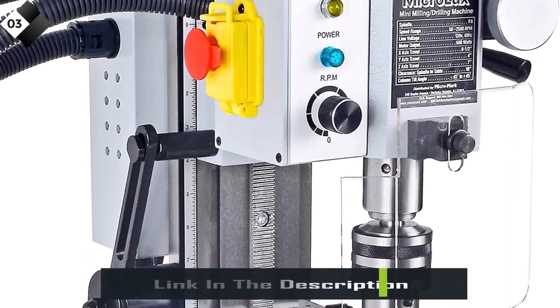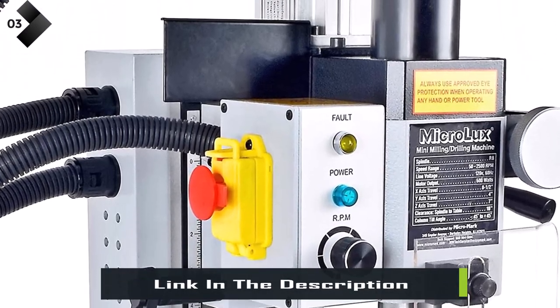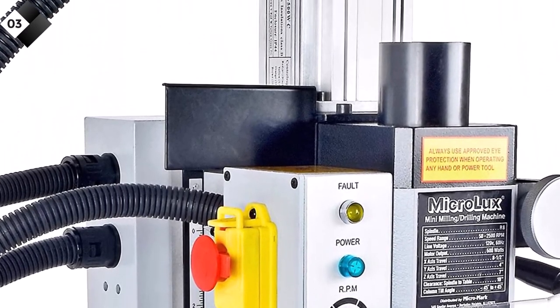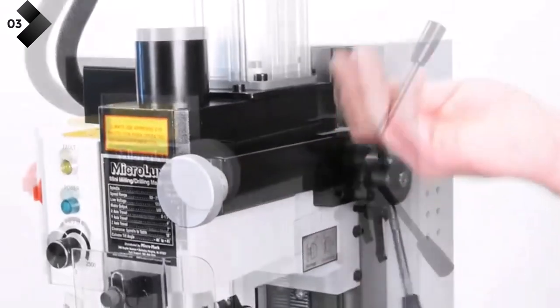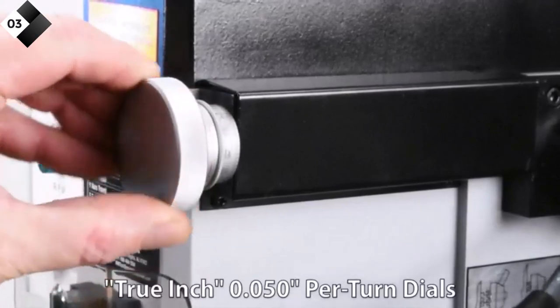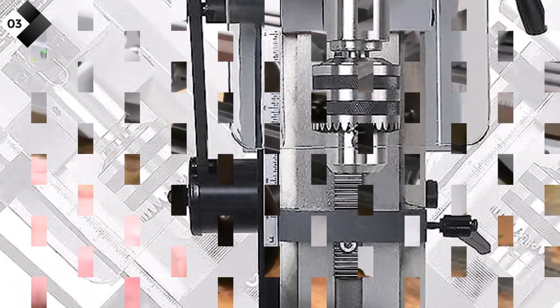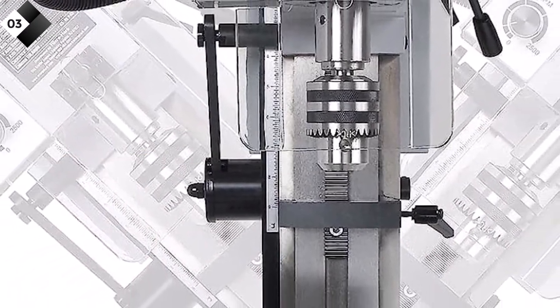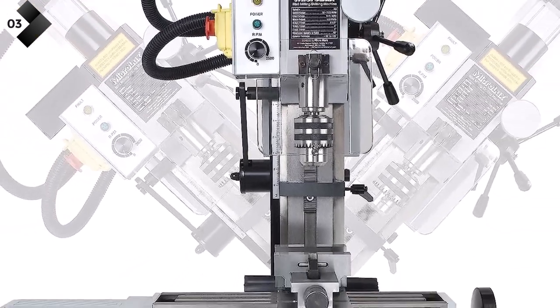Pros: compact size ideal for small-scale milling projects, powerful motor for consistent performance, variable speed control for versatility, solid construction and precise engineering, smooth movement and adjustable dovetail ways for accuracy. Cons: limited workspace due to its compact size.